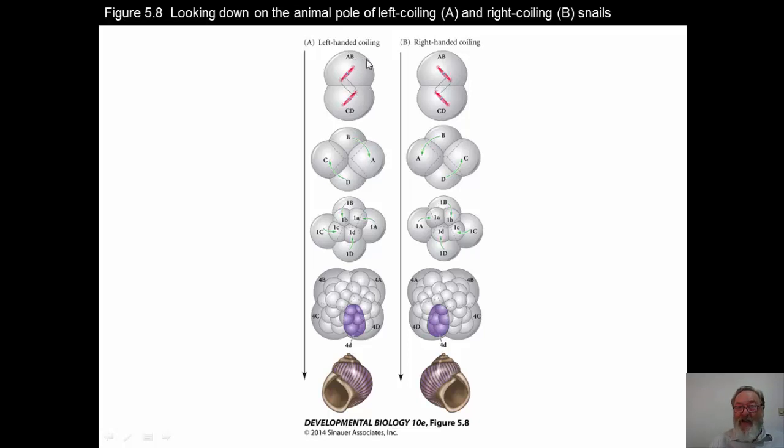But you can see, as you look down at the purple cells, that you're starting to get a spiral division, which has a different orientation, and these snails will end up being mirror images of each other.